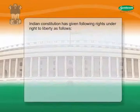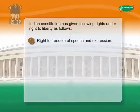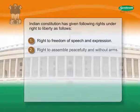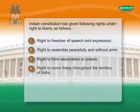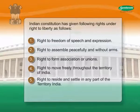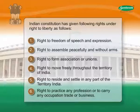The Indian Constitution has given the following rights under right to liberty: One, right to freedom of speech and expression. Two, right to assemble peacefully and without arms. Three, right to form associations or unions. Four, right to move freely throughout the territory of India. Five, right to reside and settle in any part of the territory of India. Six, right to practice any profession or to carry any occupation, trade, or business.